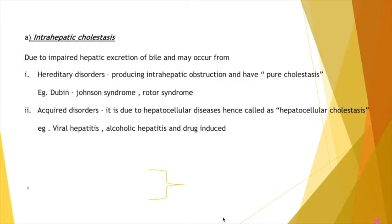Examples of hereditary intrahepatic cholestasis include Dubin-Johnson syndrome and Rotor syndrome. The next cause is acquired disorders — that is, diseases acquired after birth. These can be hepatocellular diseases, referred to as hepatocellular cholestasis, where cholestasis is due to acquired liver diseases such as viral hepatitis, alcoholic hepatitis, or drug-induced hepatitis.